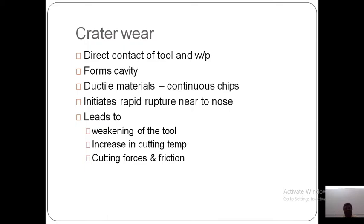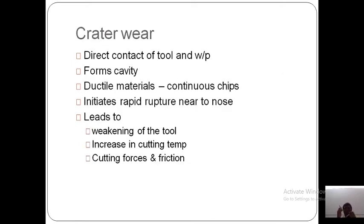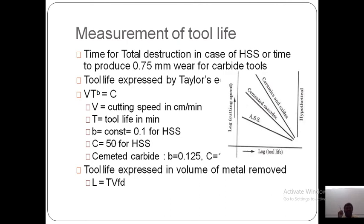Crater wear is the direct contact of tool and workpiece — it is a face wear. The crater forms a cavity in the case of ductile material with continuous chips, in the area of rapid rupture near the nose, leading to wicking of the tool, increased cutting temperature, cutting force, and friction. Before going to the measurement of tool life, we need to know the factors affecting tool life: cutting speed, tool geometry, work material, rigidity of machine tool, feed, depth of cut, tool material, nature of cutting, and use of cutting fluid.